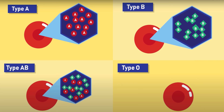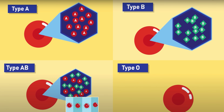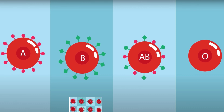Here we see the aglatinogen A present on the red blood cells of a person carrying blood group A. This person has blood group B because the red blood cells carry aglatinogen B.